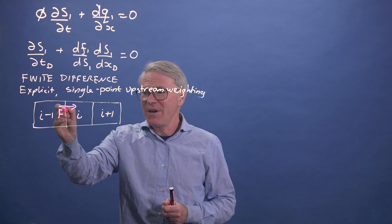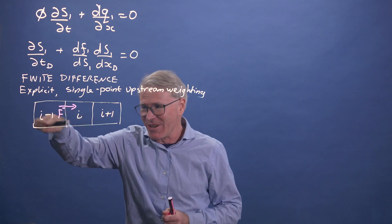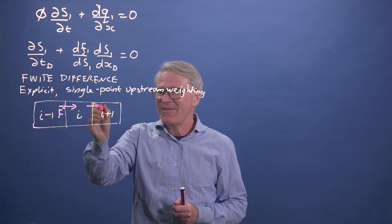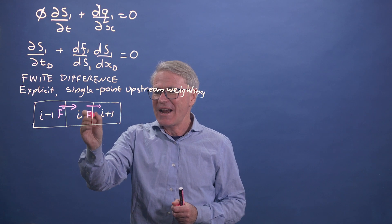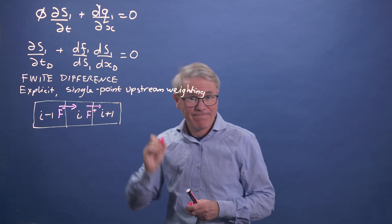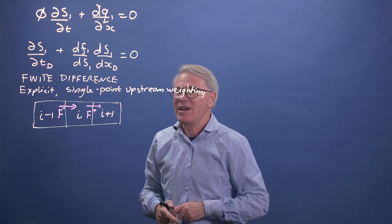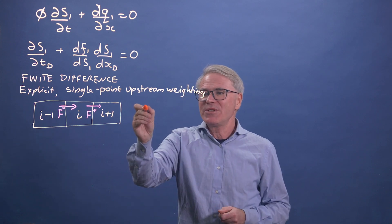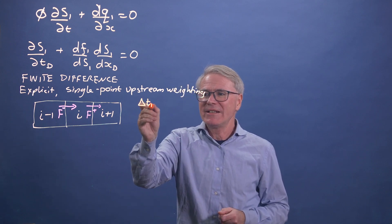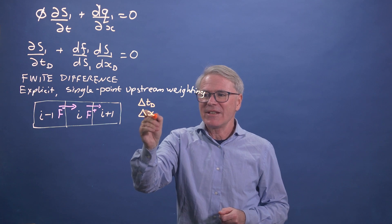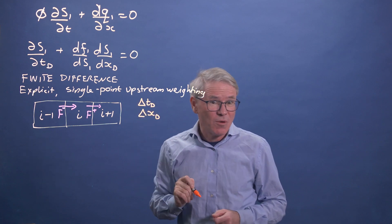And we call that F minus because it's to the minus sign, i minus one. And we have a flux out that we call F plus. And we've discretised in increments of delta Td and delta Xd. So these will be increments of pore volumes injected and increments between the two wells,